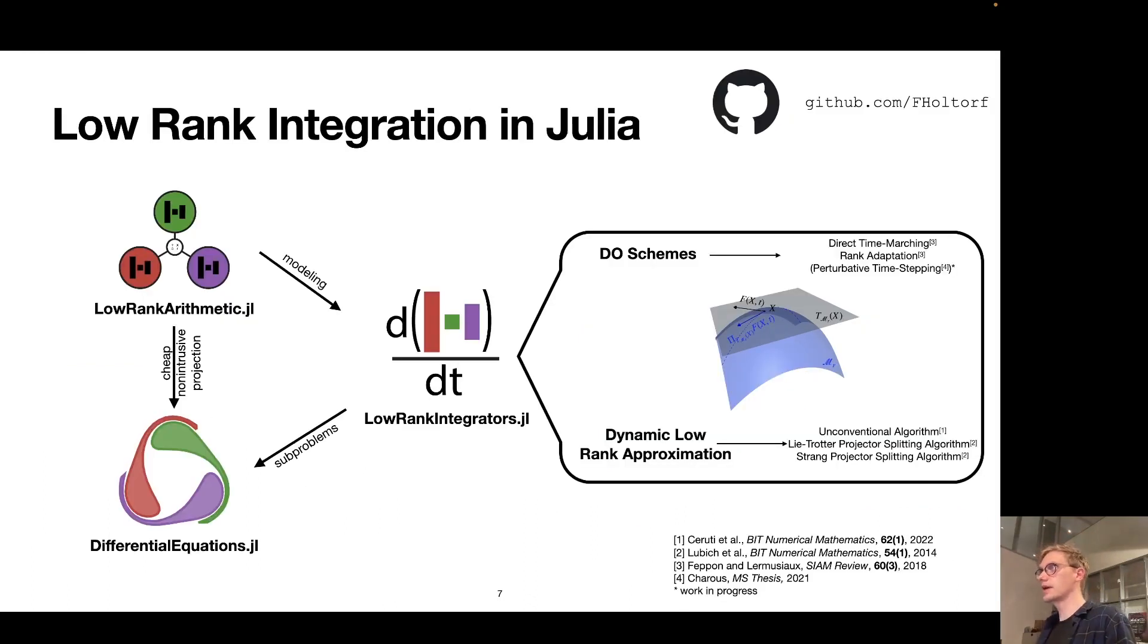To address that gap, I created two packages: LowRankIntegrators.jl and LowRankArithmetic.jl, which in conjunction are an attempt to enable a rather non-intrusive use of dynamical low rank approximation in generic settings. Both packages are embedded in the Julia ecosystem as shown here. In particular, LowRankIntegrators.jl implements the best performing and best understood low-rank integration routines out there, and draws quite heavily on DifferentialEquations.jl in order to efficiently solve certain sub-problems that arise in these routines, which are standard numerical integration problems. On the other hand, we have LowRankArithmetic.jl, which is playing a key role in allowing us to exploit low rank structure when we evaluate our model dynamics and project them, without really requiring any custom implementations for these operations.